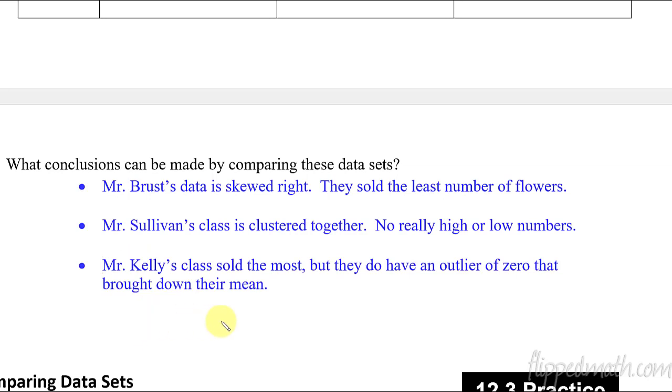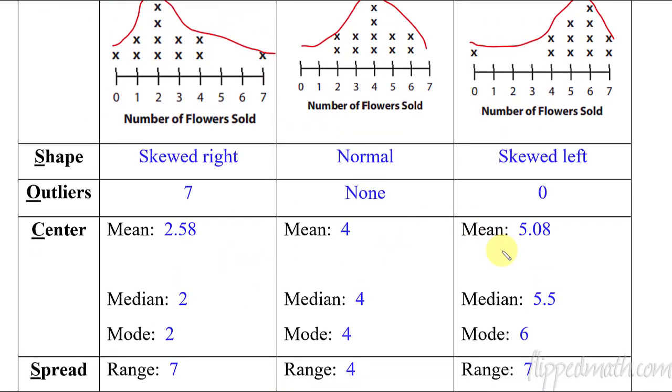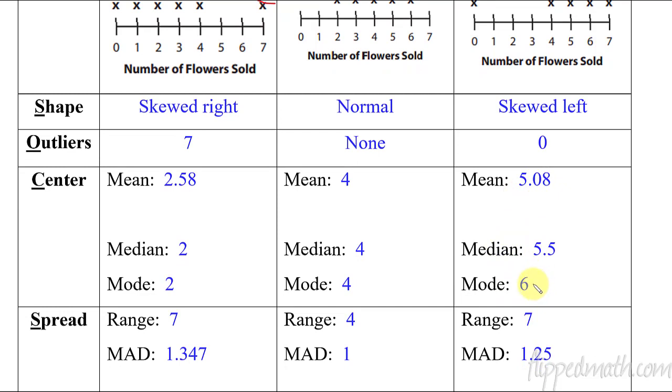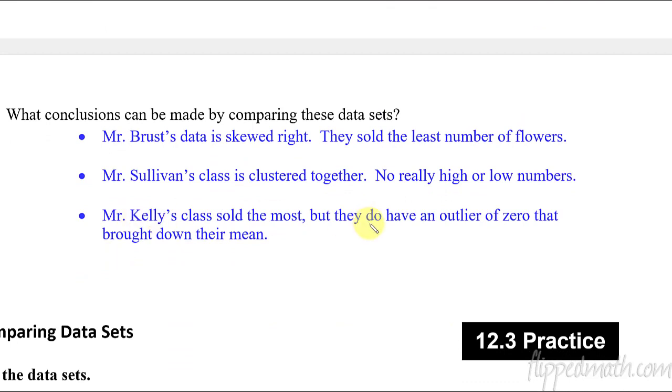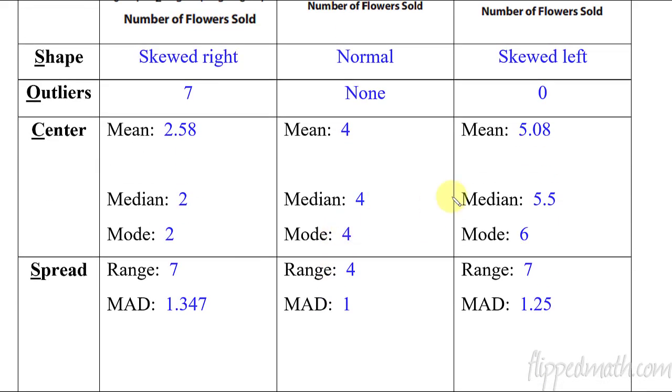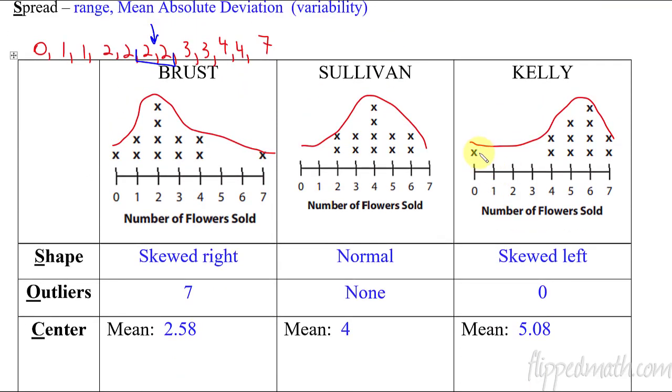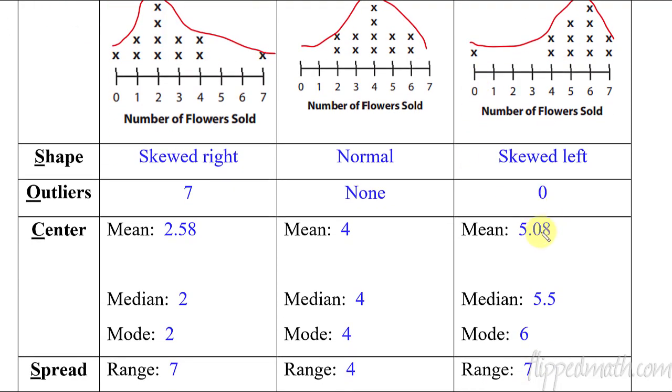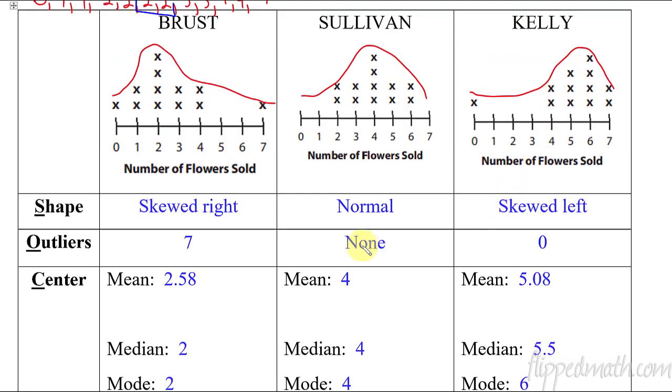And then one more conclusion, Mr. Kelly's class sold the most. So before I read this second part, let's look back up here. His measures of central tendency, 5.08, 5.5, and 6 for the mode. These are all larger than each one of these for Mr. Brust and Mr. Sullivan. So you can see, yeah, he definitely sold more. And so you could even be very specific and talk about the mean, the median, the mode, what the numbers are to demonstrate that you know what you're talking about. That's how you know Mr. Kelly's class sold more. You can also see that his class has an outlier of zero and that brought down their mean. So their mean is still larger, 5.08. But think about this, that outlier of zero, Mr. Kelly had some student who was just like, no, I don't want to sell flowers. So he just refused to do it. And so that one student brings down their mean, but even with that outlier, it's still larger than the others. So if you removed that outlier, you could see, yeah, Mr. Kelly's class would have done really well compared to the other classes.